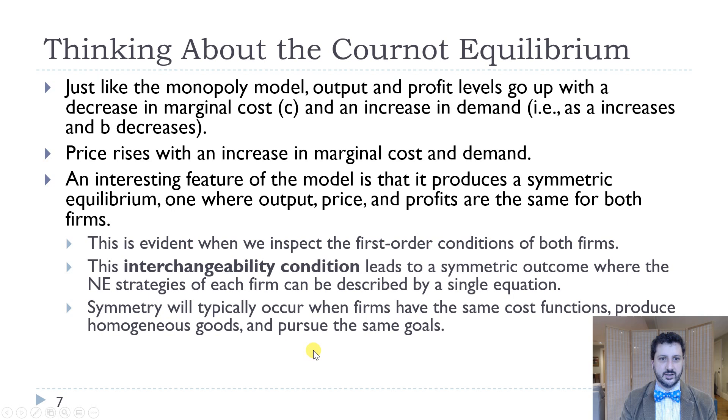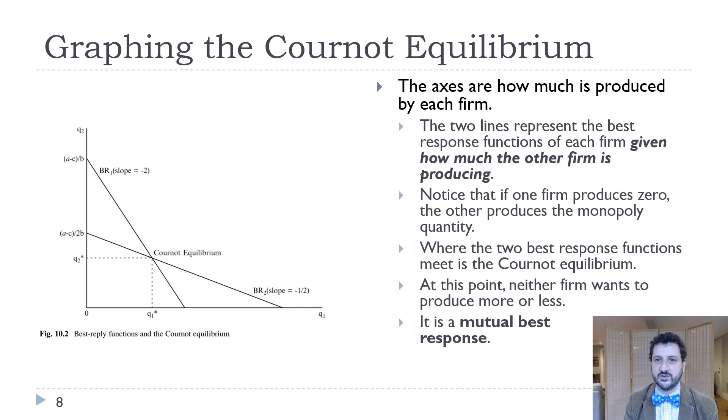So if we graph it, we can really think about this in terms of two best response functions. And so that's the way we think about Nash equilibrium is that it's a mutual best response. And so what we have here is we're graphing how much firm two produces and how much firm one produces. So we have Q2 on the vertical axis and Q1 on the horizontal axis. This is firm one's best response. So this basically says these are all the quantities that firm one will produce based on how much firm two produces. So if they produce this much, firm one's going to produce this much. If they produce this much, firm one's going to produce this much. And then this curve is the same thing for firm two. And you can see that as firm one produces more, firm two produces less.